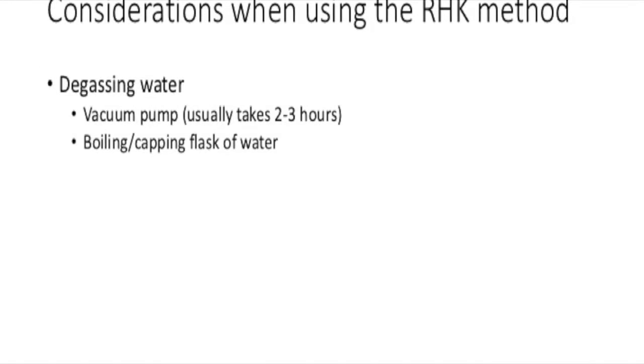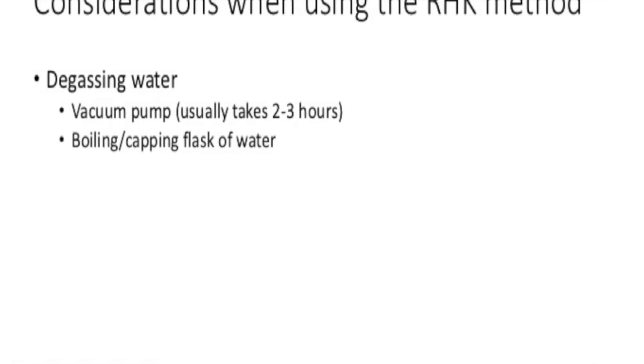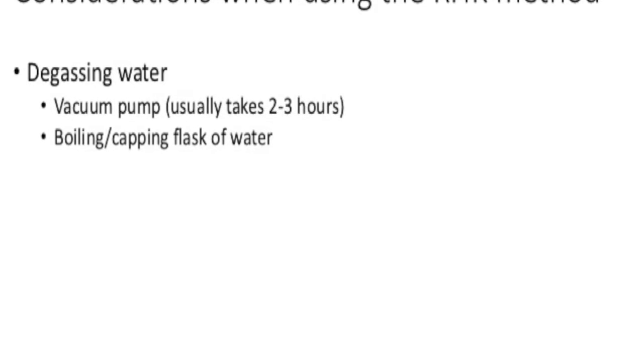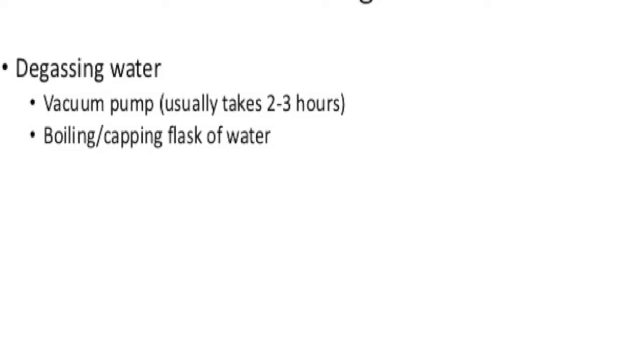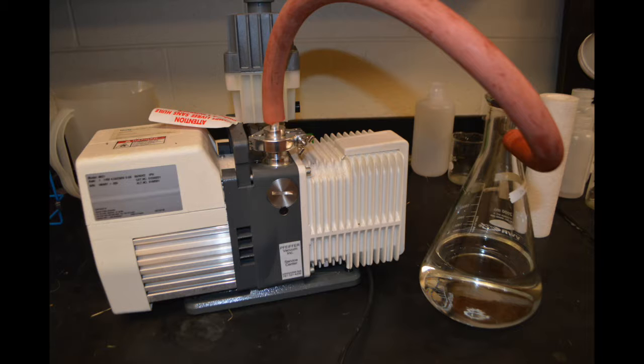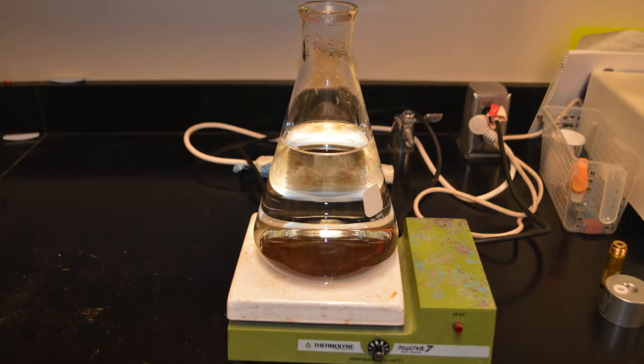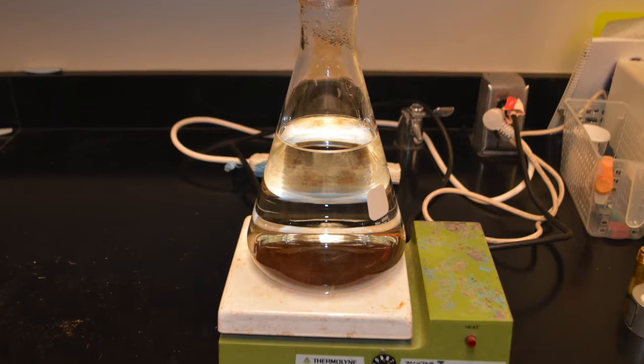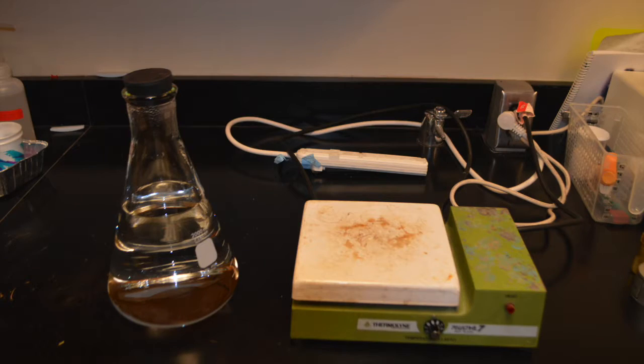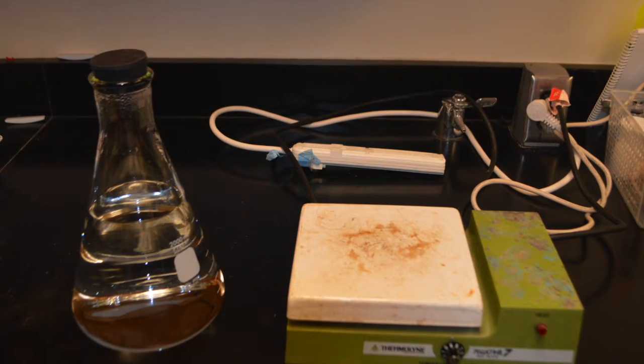Okay, so I'm just going to talk about a couple of things to consider before you start using this method. The first is degassing the water, which I mentioned that we use degassed and filtered deionized water. So there's two general ways you could degas your water. One is with a vacuum pump, and so here's a picture of the setup that we would use for that. And another way that you can do it that's a little simpler is if you boil the water for about 10 or 15 minutes, and then take that water off of the hot plate, cap it with a rubber stopper and let it sit overnight. This process will also degas the water and you'll be ready to go in the morning.